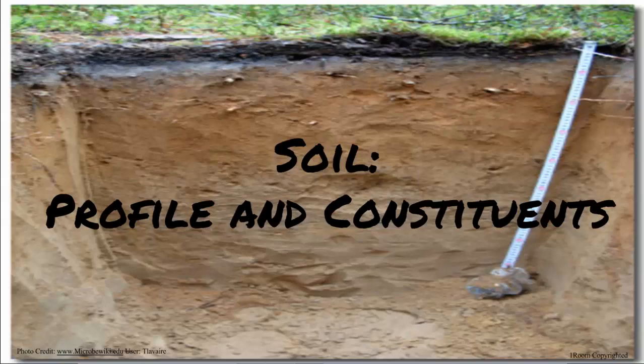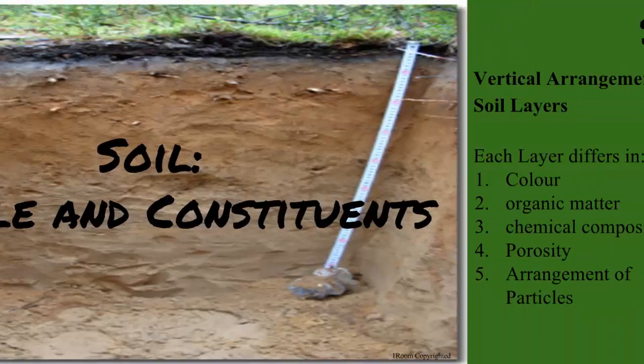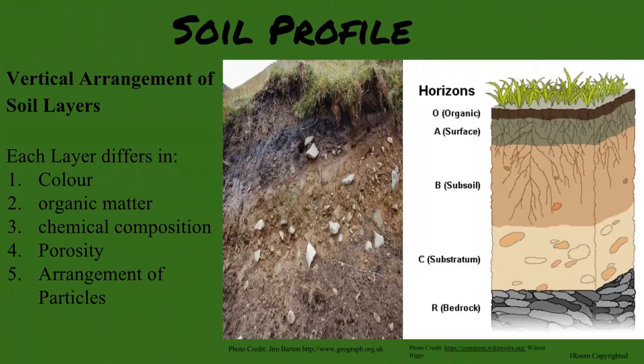Now, look at the side of this hill. What do you mean, organized? What you are looking at is a soil profile. Soil profile is a vertical arrangement of soil layers. Each layer has a different color, organic matter, chemical composition, porosity and arrangement of soil particles.